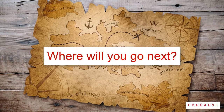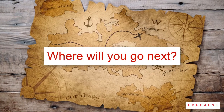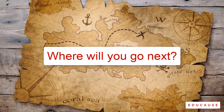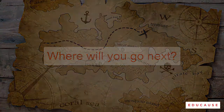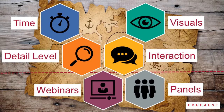Thank you for completing this overview module. You are on your way to making a positive impact on your session participants. It's time to decide where you will explore first. The four core skill areas are Time, Visuals, Detail Level, and Interaction. Select any of them to begin your exploration. We suggest saving the optional Webinars or Panels Micro Learning Modules until you have completed all of the core modules first. Want a hint? Try starting with Time.